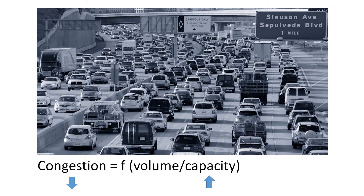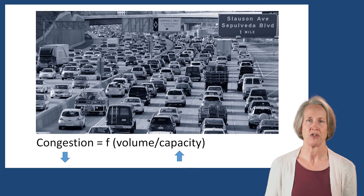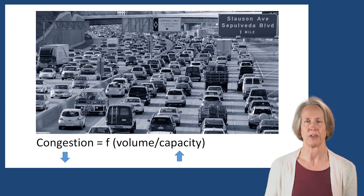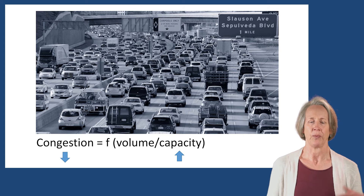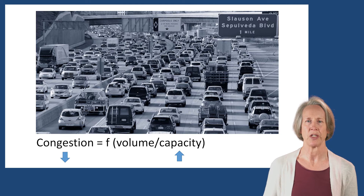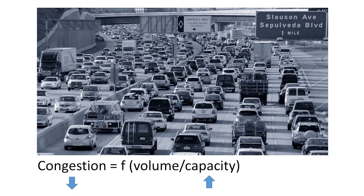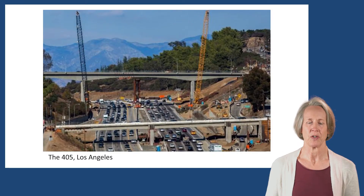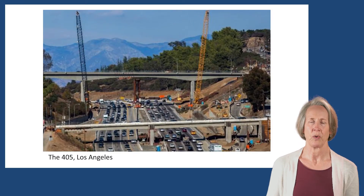I'm sure you've all experienced the pain of congestion. In more technical terms, congestion is a function of the ratio between the volume of travel and the capacity of the roadway system to accommodate that travel — in other words, the volume to capacity ratio, or what we sometimes call the V over C ratio. So traditionally, when we thought about the problem of congestion and the goal of trying to reduce it, policy focused on increasing capacity — in other words, widening the roadway system.